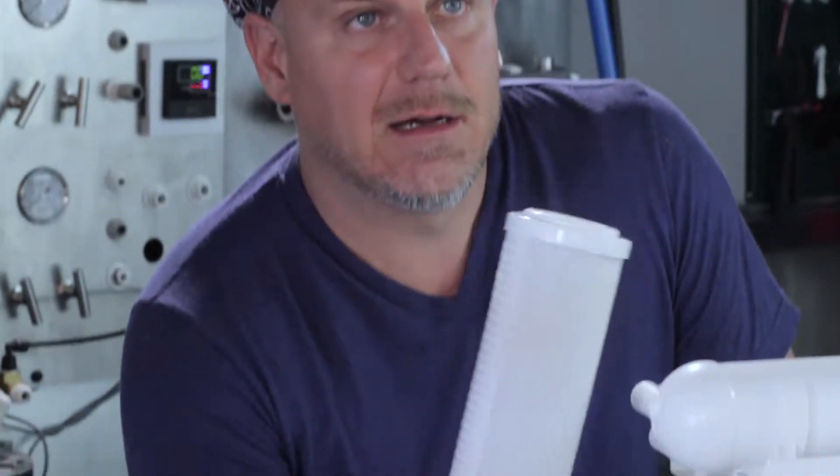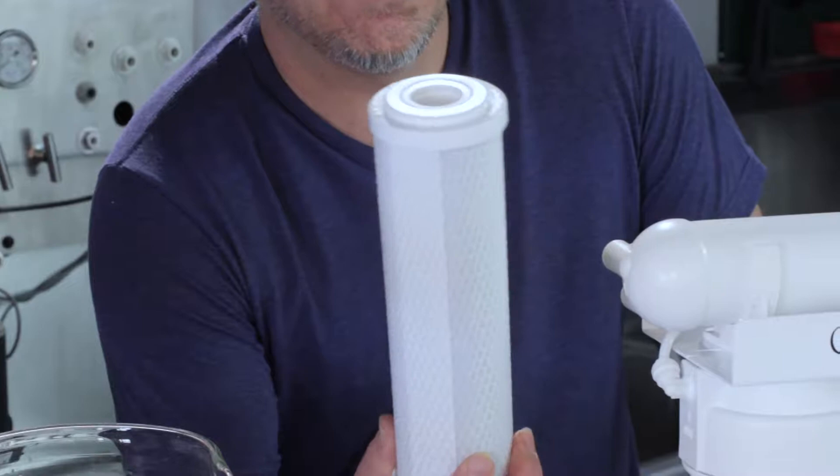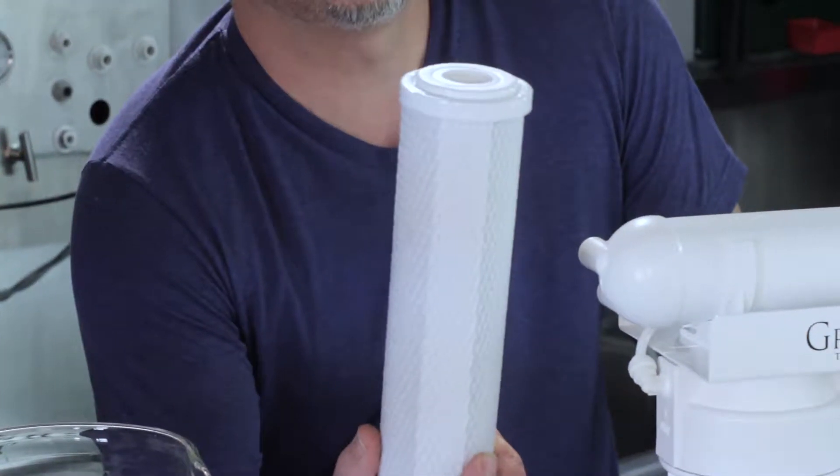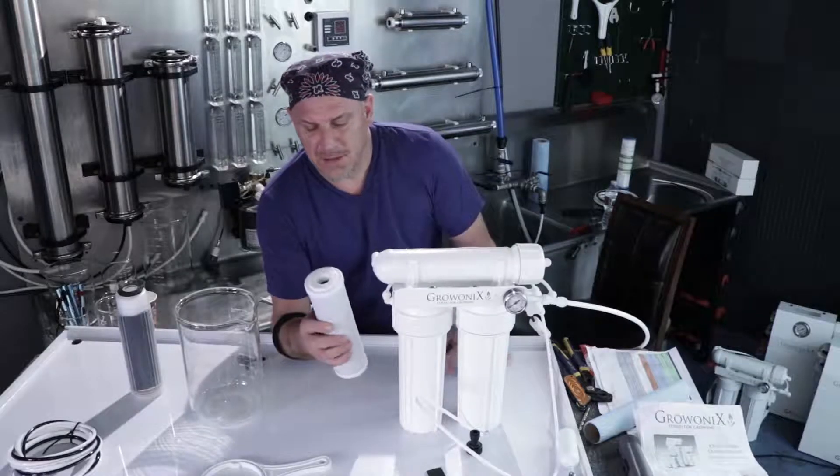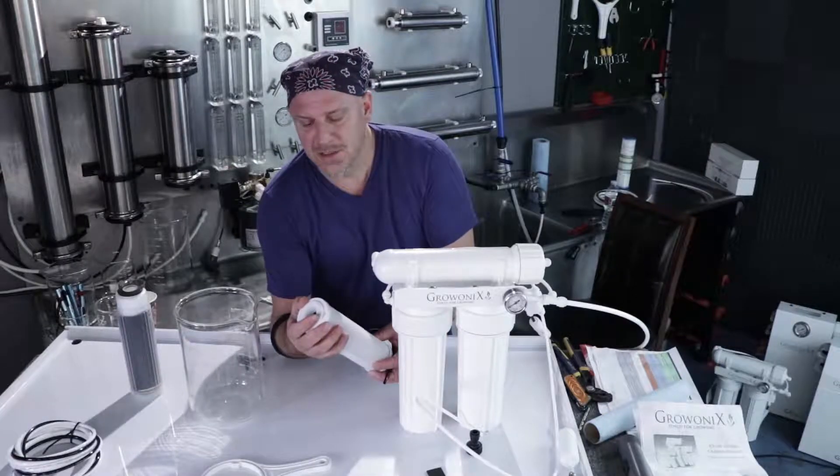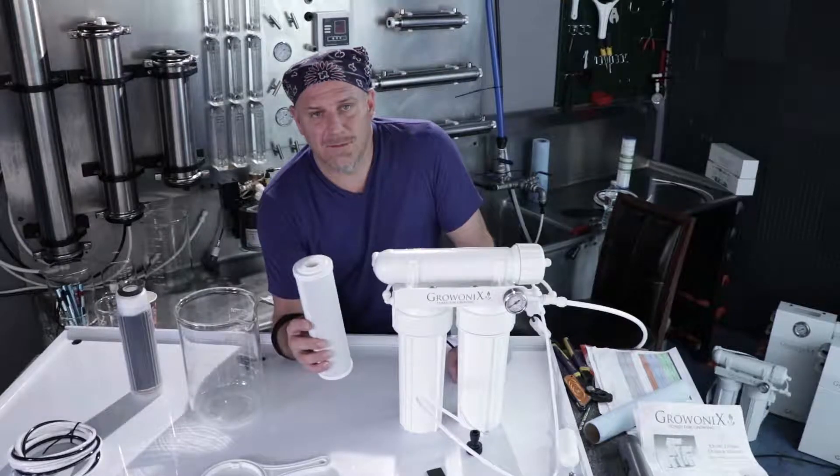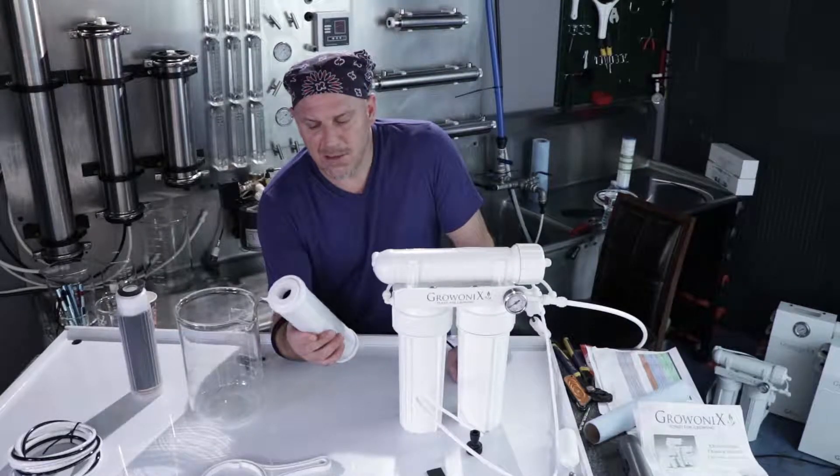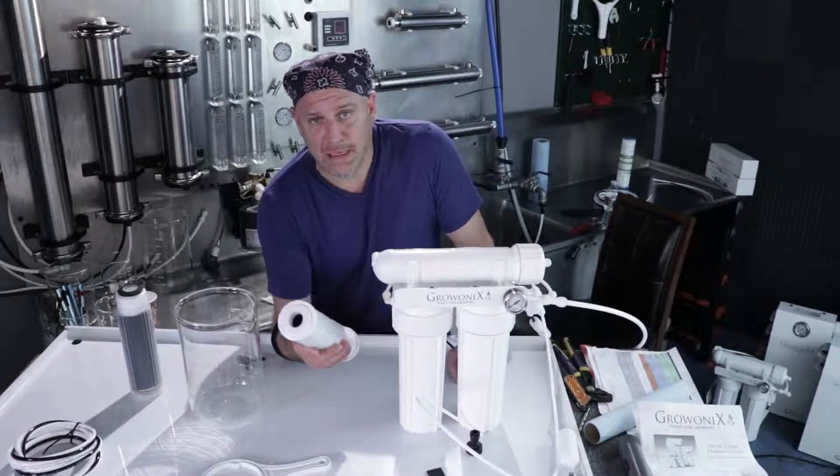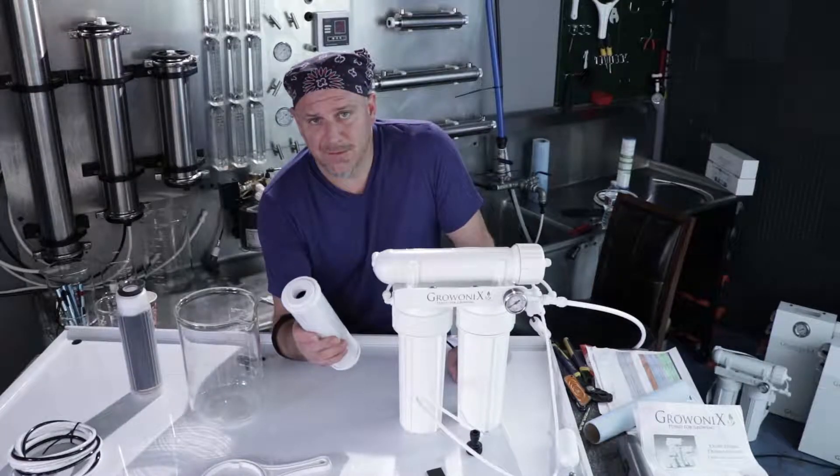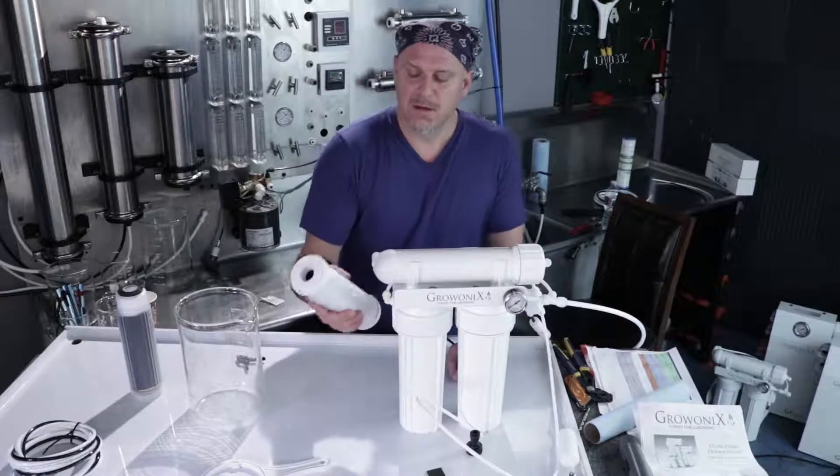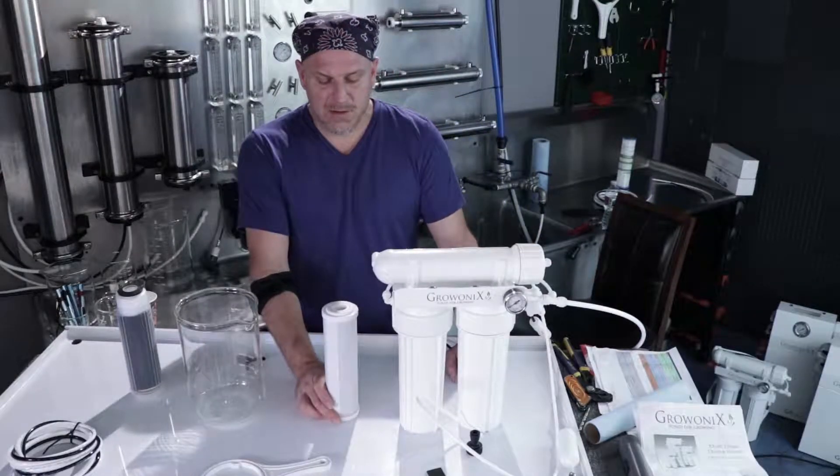The next step is to flush the carbon filter. Now if your unit came with a standard CC, this would be a CF-2510CC. This is the size two and a half by ten inch, that's the designation in the part number. CC is this type of carbon, it's kind of a white block and this is a coconut shell carbon filter. It's really great for chlorine, not very effective for chloramine, but this is a standard carbon block that ships in these units.